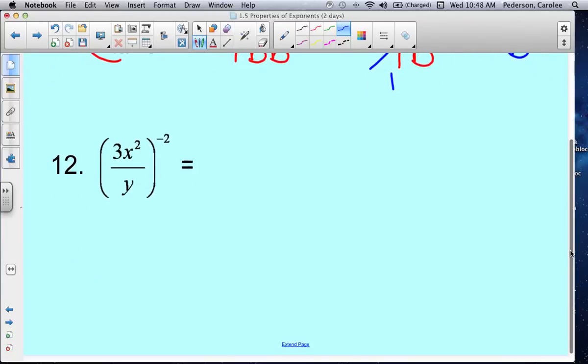Last example. You can do this problem two ways. One thing you can notice is there's a negative 2 power. So you can either distribute, or I'm going to erase that. There's a negative exponent.